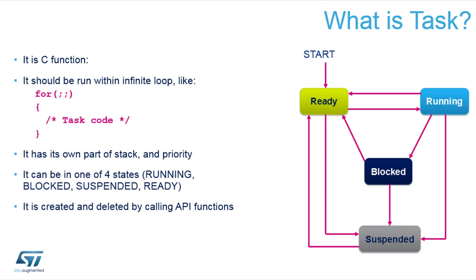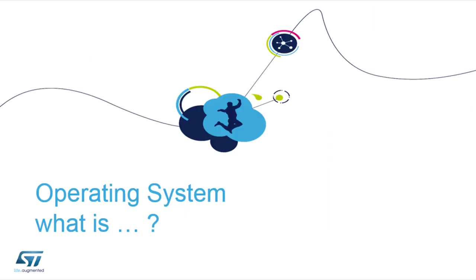A question to you: what is an operating system? What do you expect from an operating system? Simultaneous running of tasks, implementing different modules, hardware resources management, interrupt and scheduling of tasks — all this the operating system should handle.